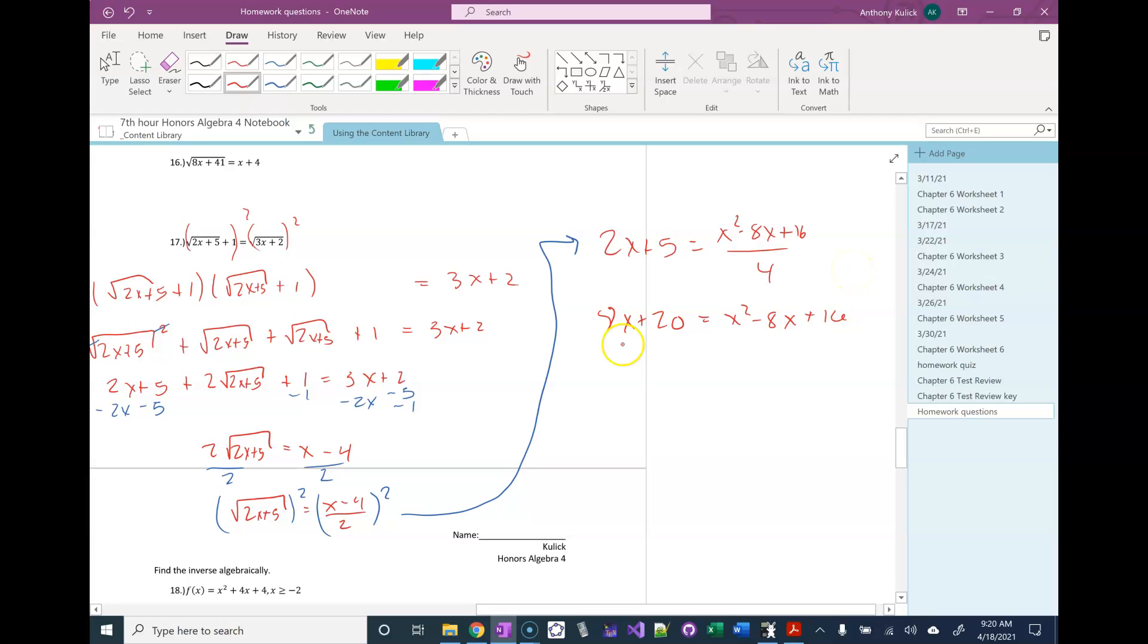And what I'm left with is a quadratic. So I'm going to subtract 8x from both sides and subtract 20 from both sides.